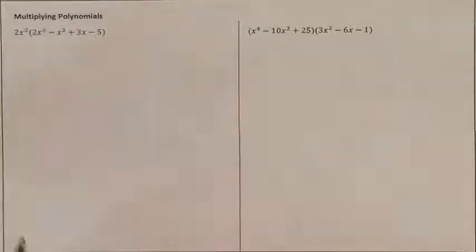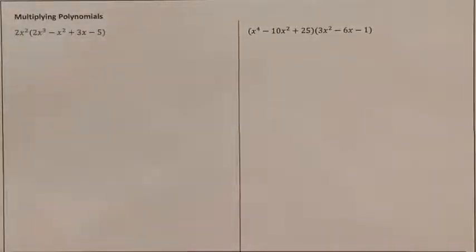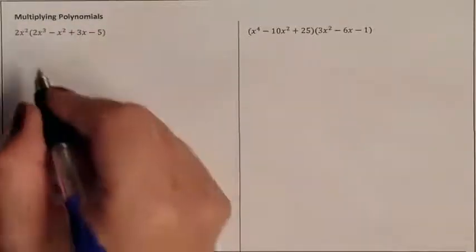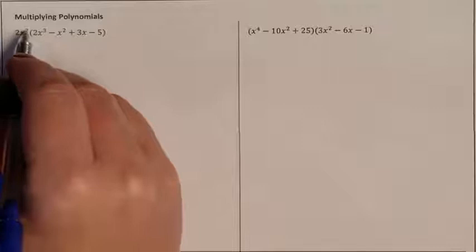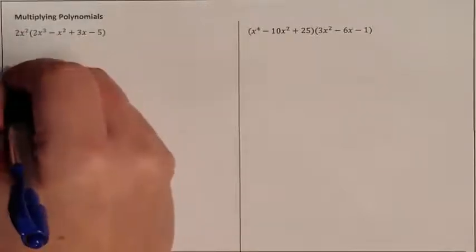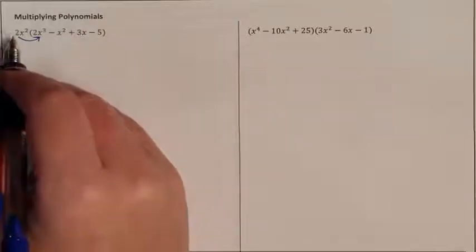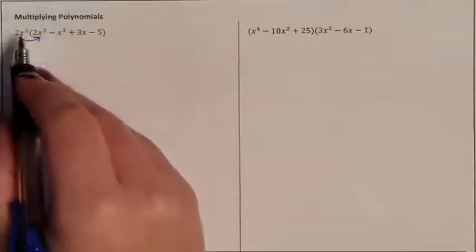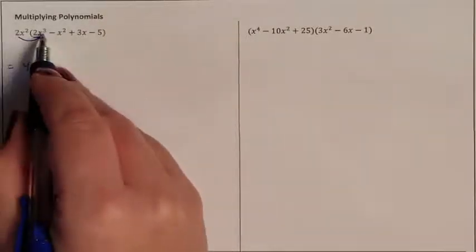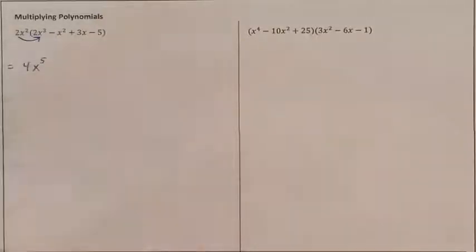Now we're being asked to multiply polynomials. We can multiply using any method we'd like. For this first one, I'm going to use the distributive property, which means 2x squared needs to get multiplied to everybody in the second parenthesis. So 2x squared times 2x to the third: 2 times 2 is 4, and x squared times x cubed is x to the fifth, because you add exponents when multiplying.